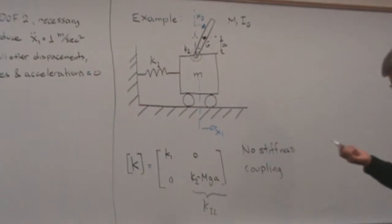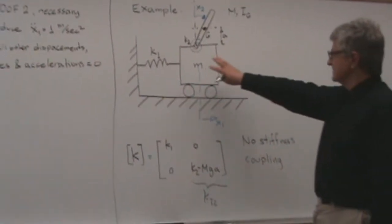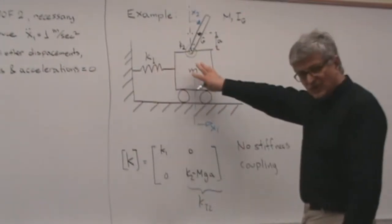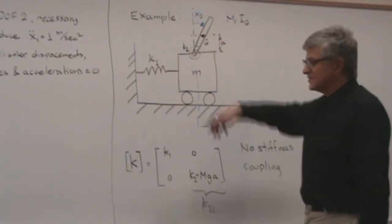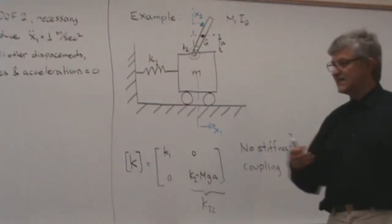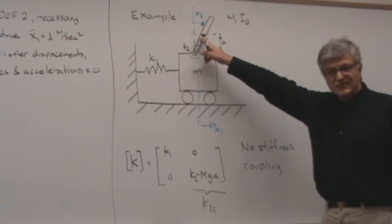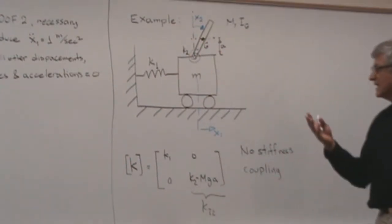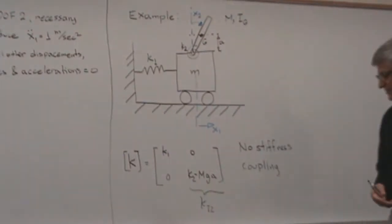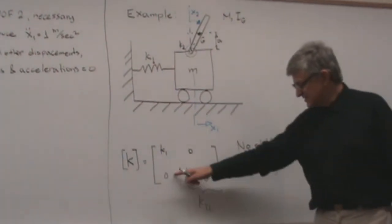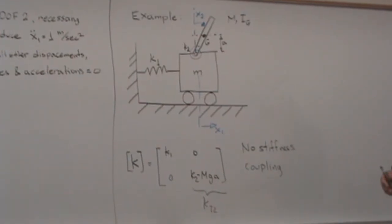The off-diagonal elements of the stiffness matrix are zero, meaning there is no stiffness coupling. This means that if you displace one degree of freedom by applying a force, no force needs to be exerted on the other degree of freedom to keep x2 equal to zero.